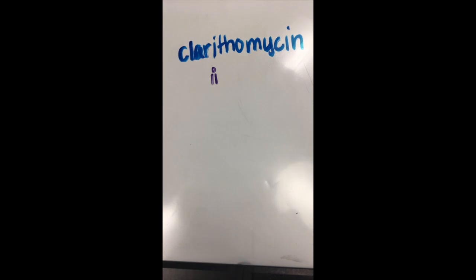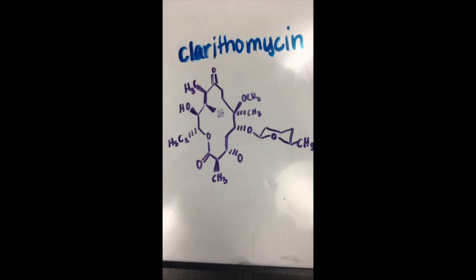Clarithromycin is the main antibiotic that fights Helicobacter pylori. It works so well because there is a minimum inhibitory concentration, so it does not take a lot of the antibiotic to kill the bacteria.